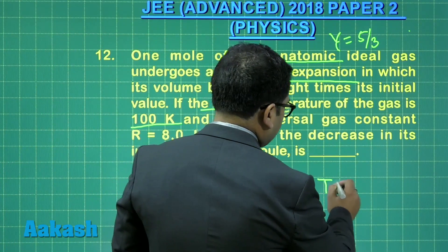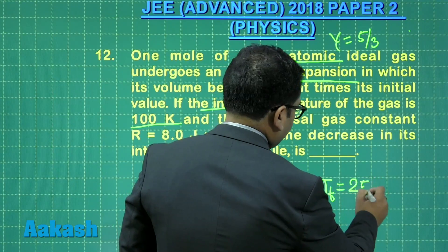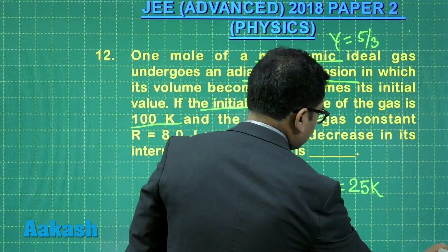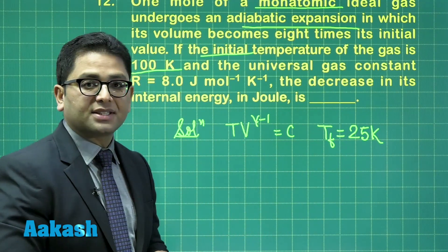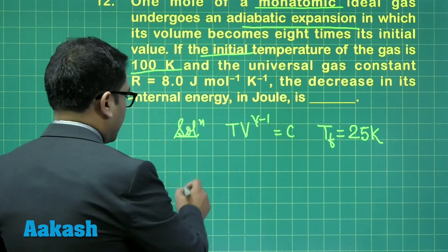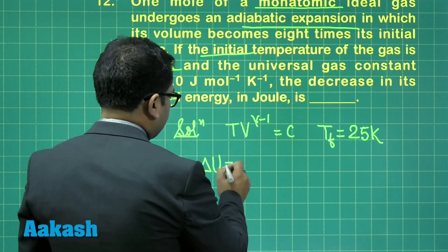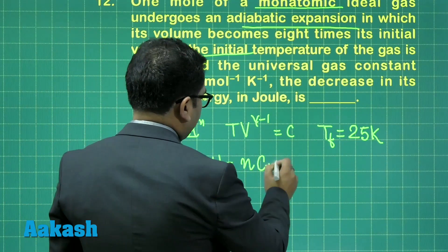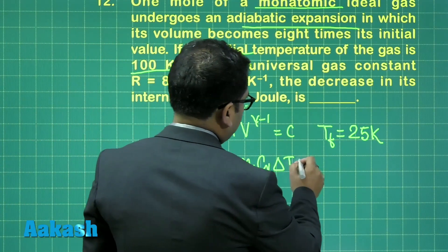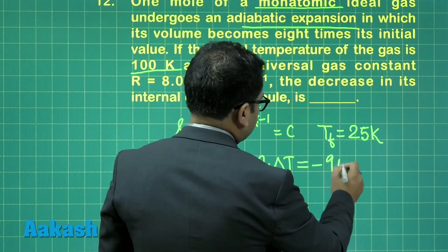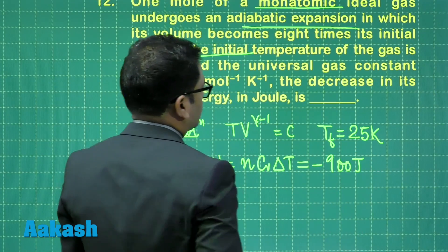And when you calculate the final temperature very easily, without any hassle, you get 25 Kelvin. Now I got the final temperature. So the change in internal energy, that has to be n C_v delta T. And that n C_v delta T, when you calculate it, you get it as minus of 900 Joule.